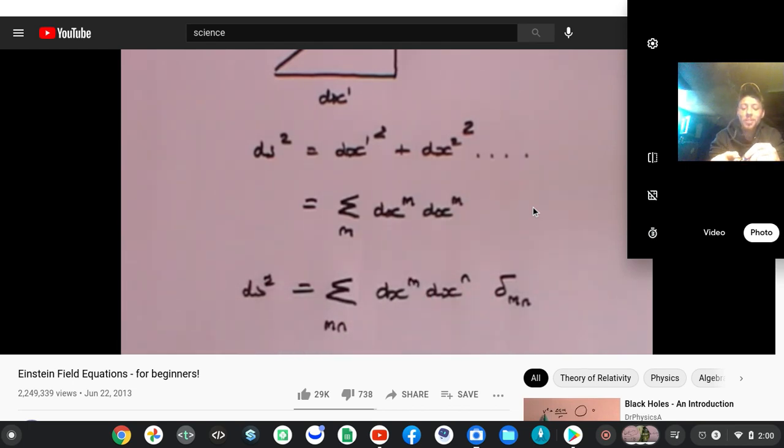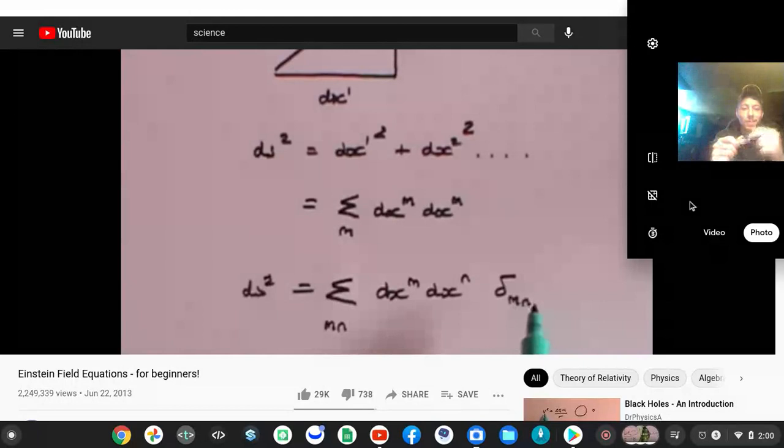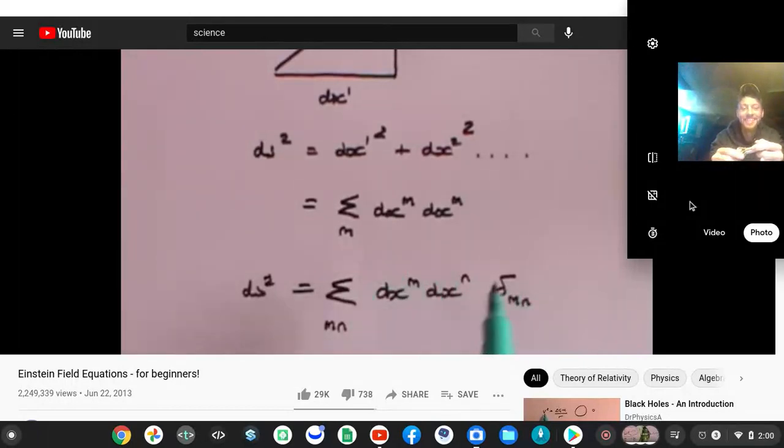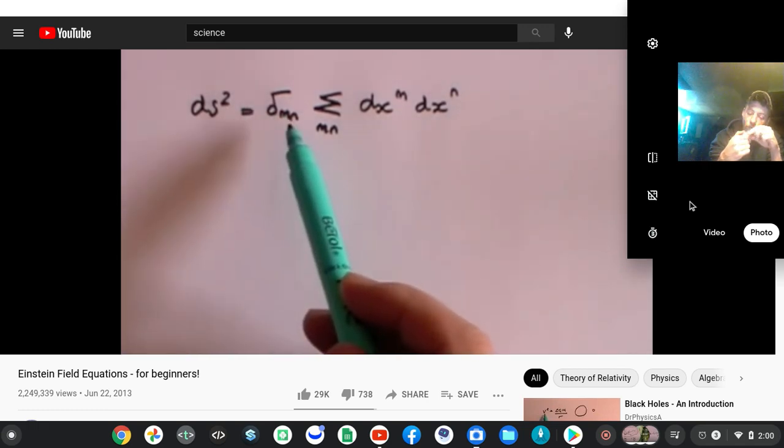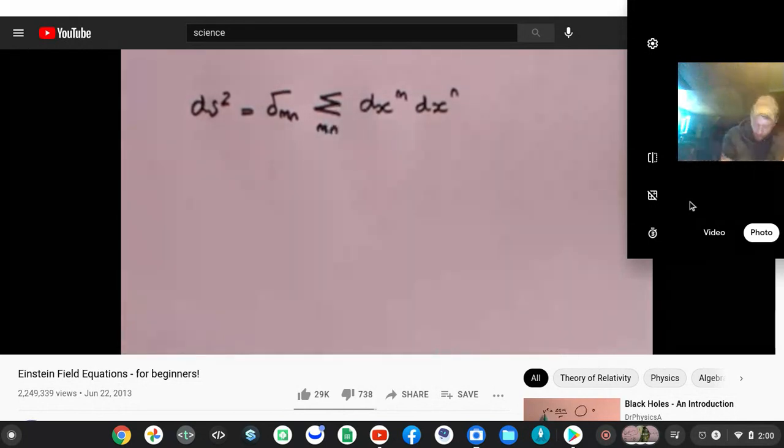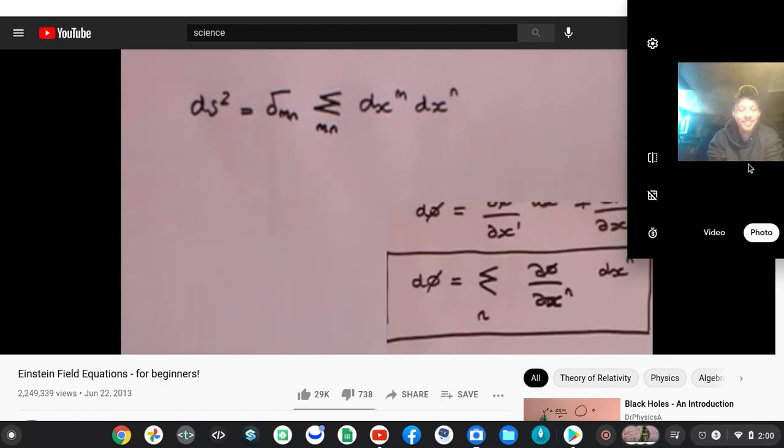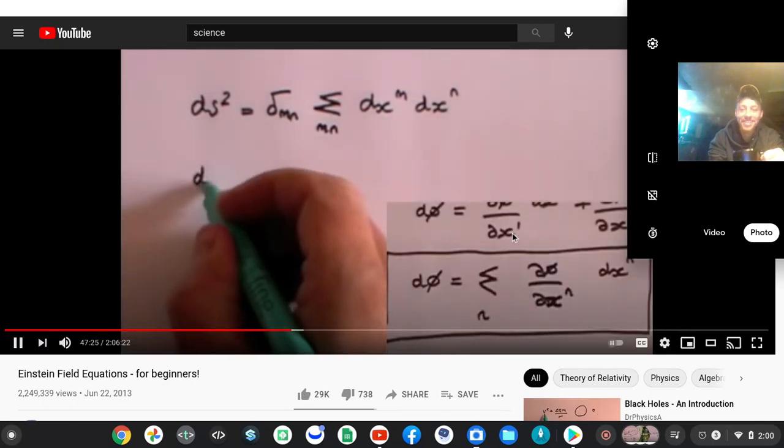So when m equals n then you simply get the squared term. When m does not equal n then this whole term becomes 0 because delta mn is 0, avoiding any of the dx1 and dx2 cross terms that you don't need in Pythagoras. So I've rewritten that formula. I've simply put the Kronecker delta at the beginning rather than at the end. And now I want to remind you of equation 1 that we derived.